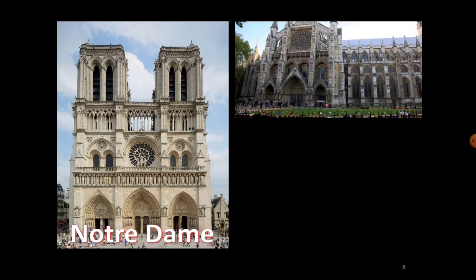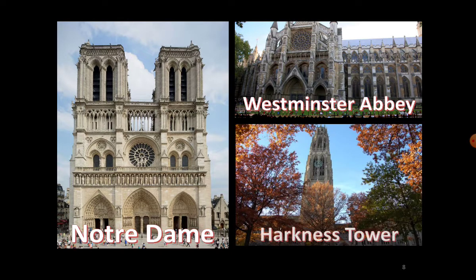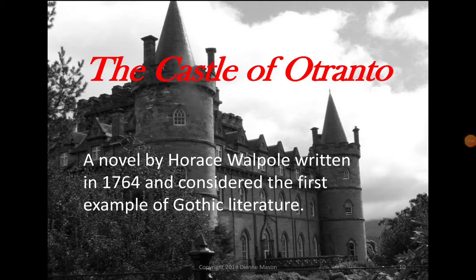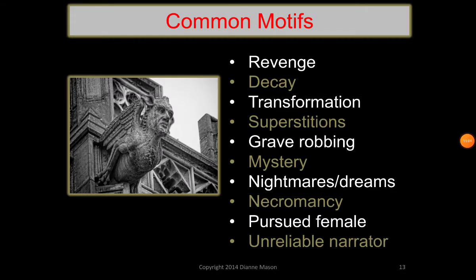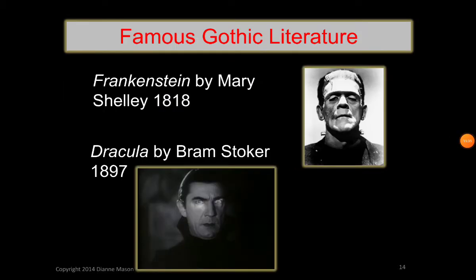Examples of gothic settings include Notre Dame, Westminster Abbey, and Harkness Tower. The first gothic novel is 'The Castle of Otranto' by Horace Walpole, written in 1764 and considered the first example of gothic literature. Common motifs of the genre include revenge, decay, transformation, superstitions, grave robbing, mystery, nightmares, dreams, necromancy, unreliable narrator, and famous works such as Frankenstein by Mary Shelley and Dracula by Bram Stoker.